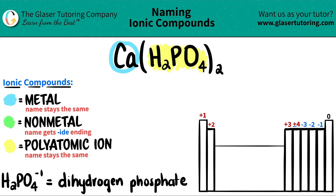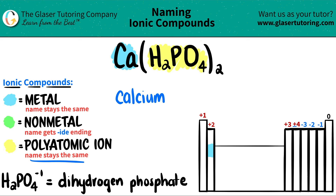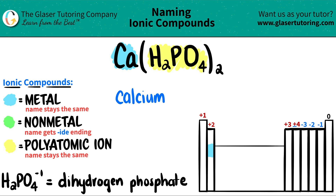The only other element is calcium, and if we see where calcium is, it's right here on the periodic table. All elements in group two are metals. Now let's name it. The metal name always stays the same, so you don't have to change it — CA would just stay calcium. And polyatomic names always stay the same, so that's why you have to memorize them. So it would be dihydrogen and then phosphate.